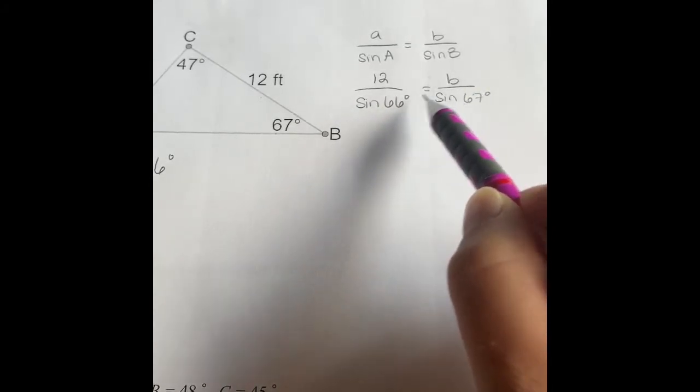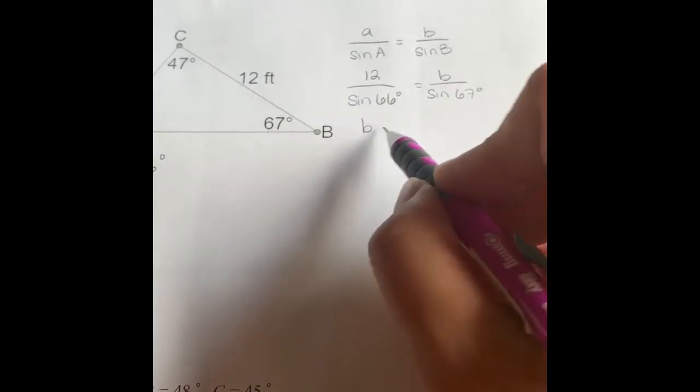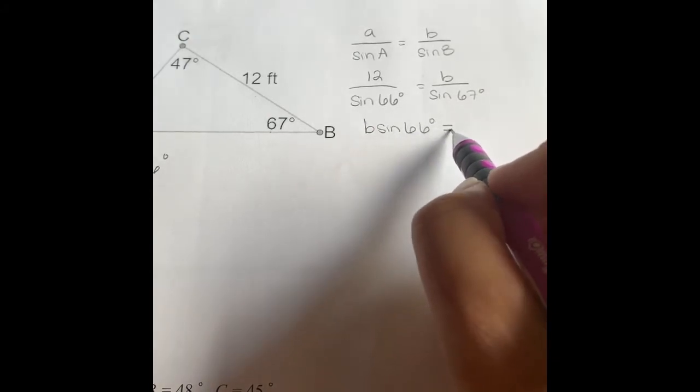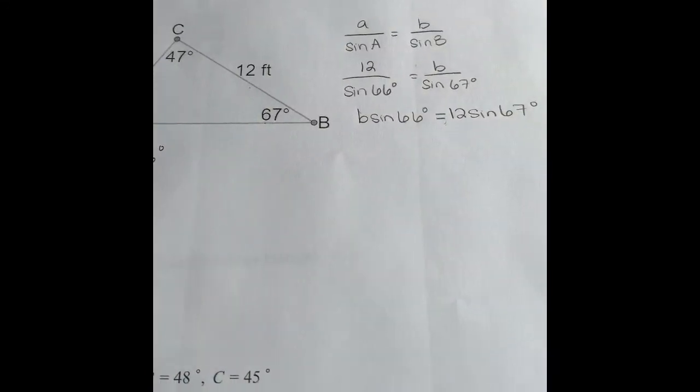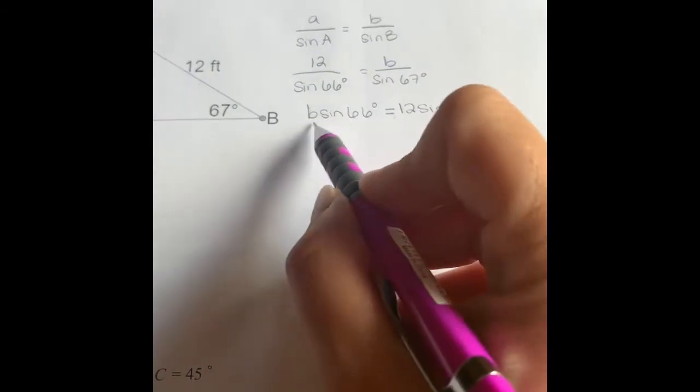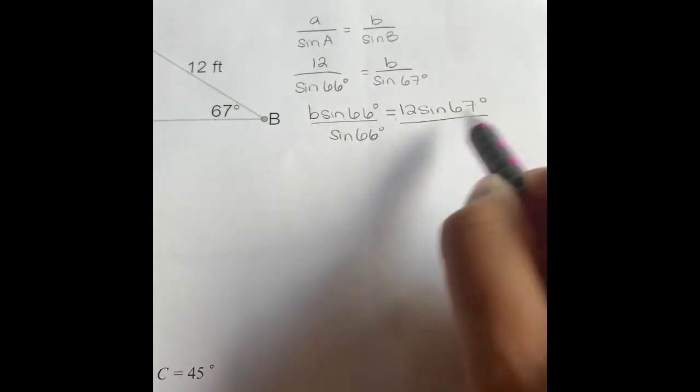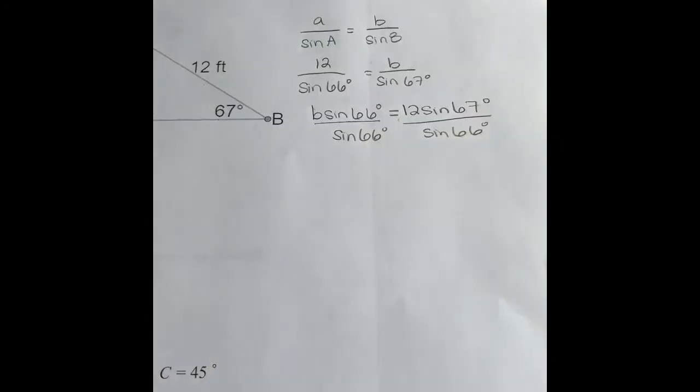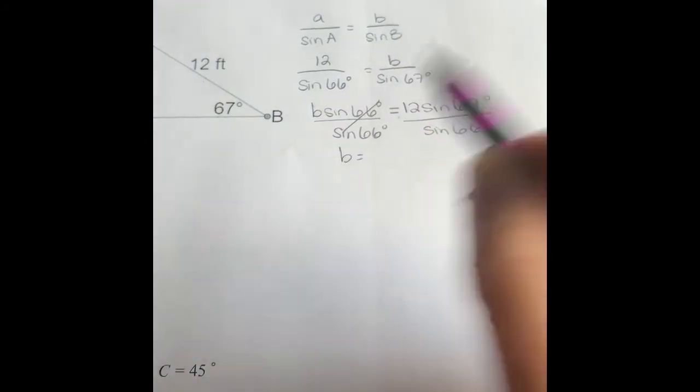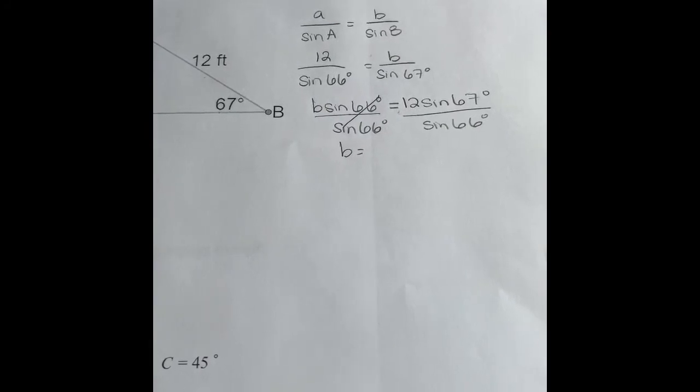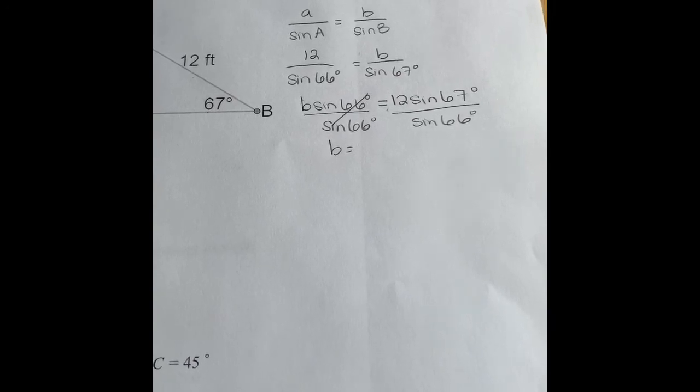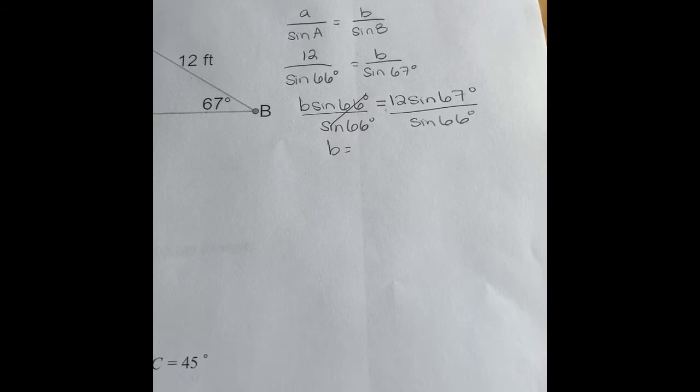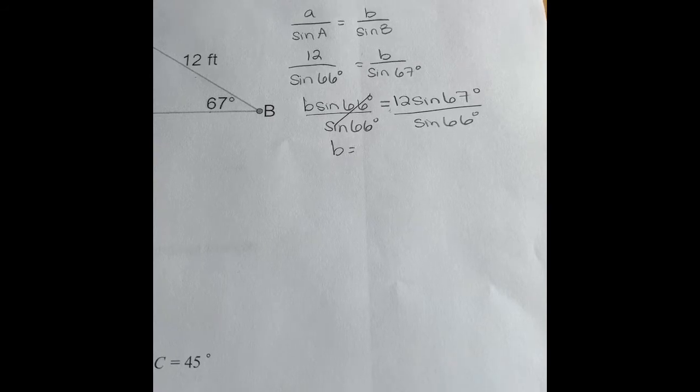It does not matter which diagonal you multiply first. I generally start with the one that has the unknown. So I have B times the sine of 66 degrees equals 12 times the sine of 67 degrees. So I cross multiplied. Now to get B by itself, I'm going to have to divide by the sine of 66 degrees. What I do to one side of an equation, I have to do to the other. These will cancel. So now I can plug this into my calculator. Regardless if you have a physical calculator or online one, just double check really quick that your mode is in degrees because your angles are being measured in degrees. And we've learned that degrees and radians give you completely different answers.